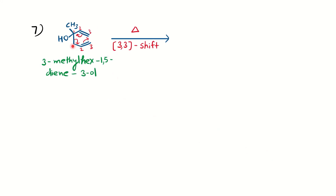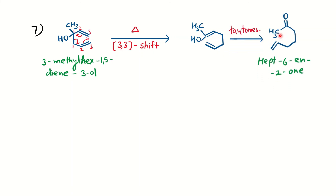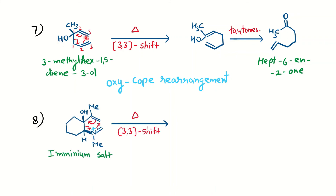This is an example where in your 1,5-diene system a hydroxy group is present at the third position. If you number 1-2-3, the OH group is present at the third position, then the cope rearrangement will be called oxy-cope rearrangement. Again, you will be forming a sigma bond at 3-3 followed by the rearrangement. Tautomerization is possible here and you will get the keto form which is more stable.